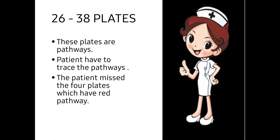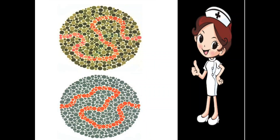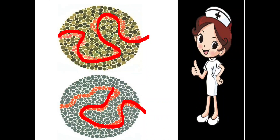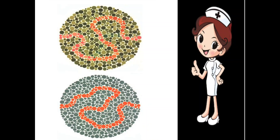Plates 26 to 38 are pathway plates. Pathways are given here and the patient has to trace the pathway. Four plates have a red pathway — if the person has a protan defect, they can miss the pathways. These plates are also useful for illiterate persons because they can trace the pathways instead of reading numbers. Thanks for your patience in listening.